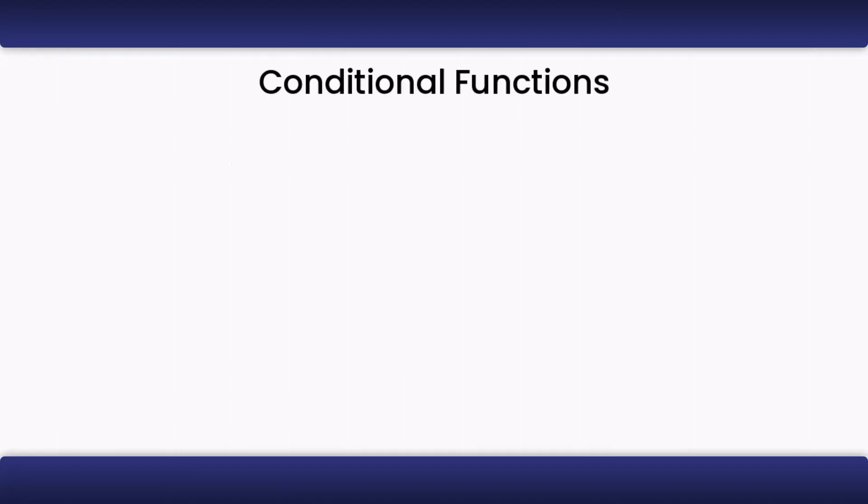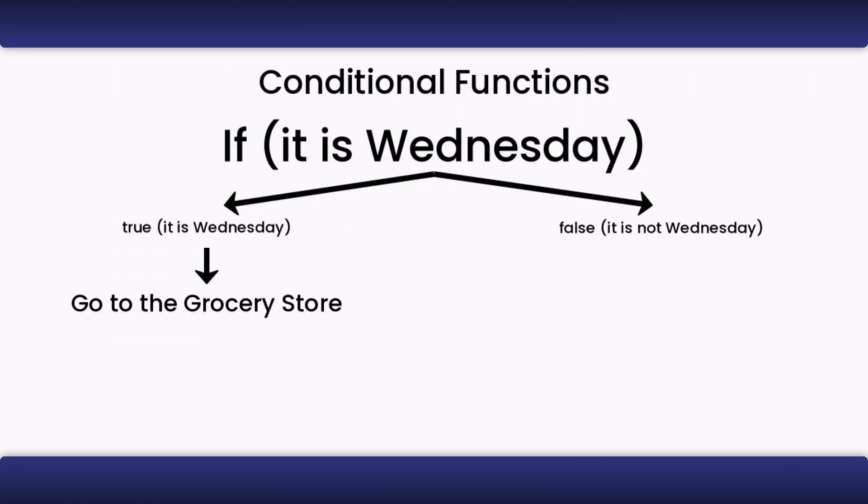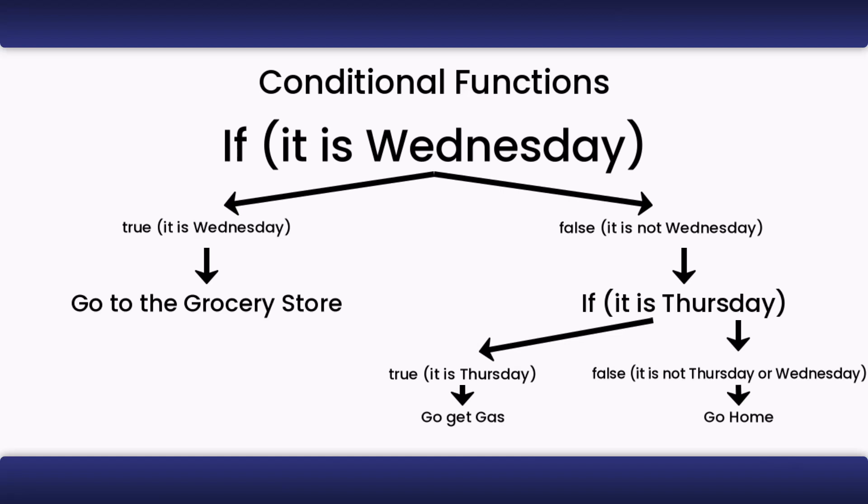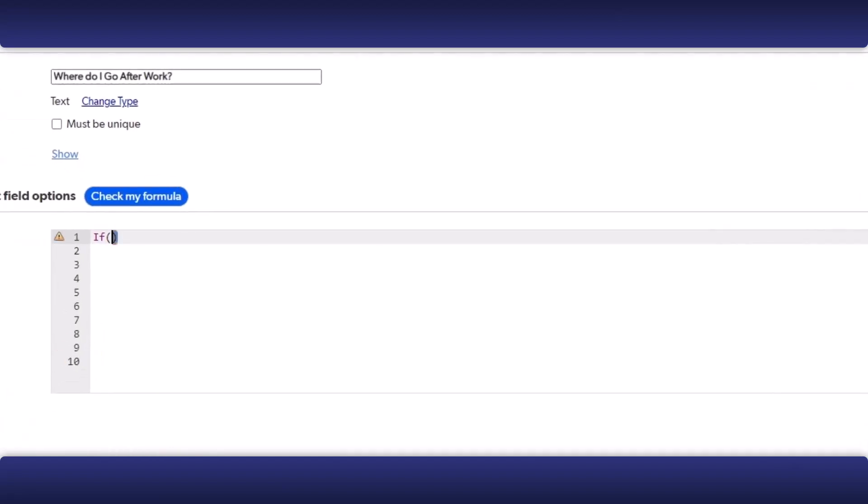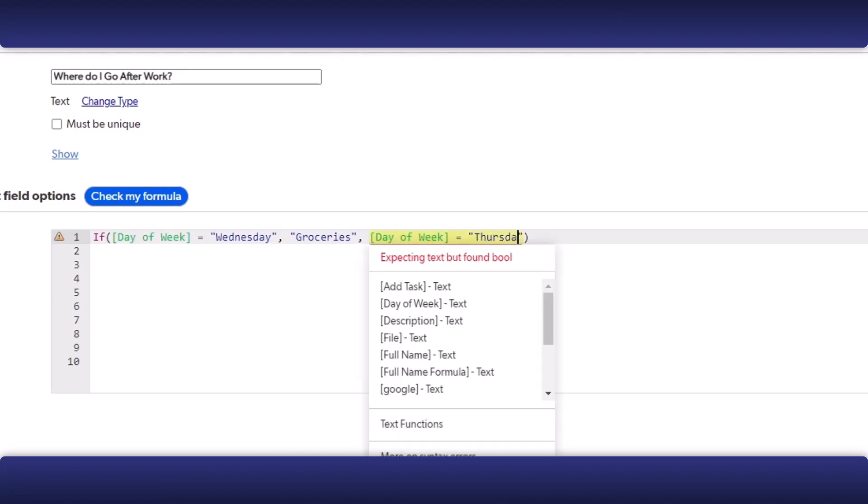In QuickBase, it would be written like this. The if condition allows you to chain many conditions together. Using the last example, let's add, if it is Thursday, go get gas. It would look like this. If day of week is equal to Wednesday, groceries. Day of week is equal to Thursday, gas. Home.